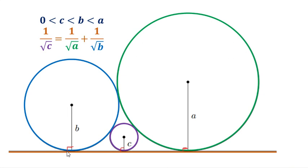My approach will be to look for congruent parts in the figure, because this will allow us to create an equation that we will manipulate in order to arrive at the desired equation. I will start by drawing a segment passing through the center of the smallest circle and perpendicular to the other two radii. So we have this one.